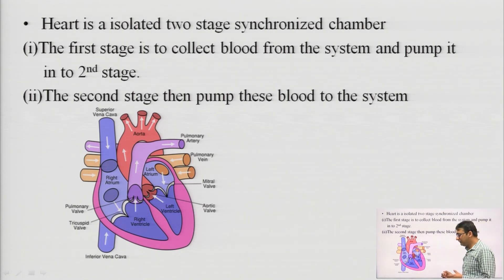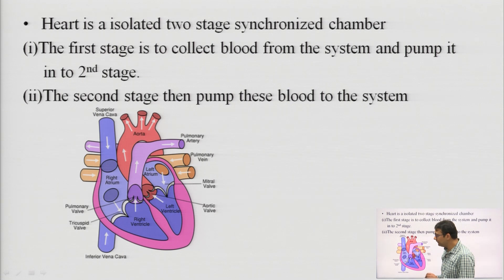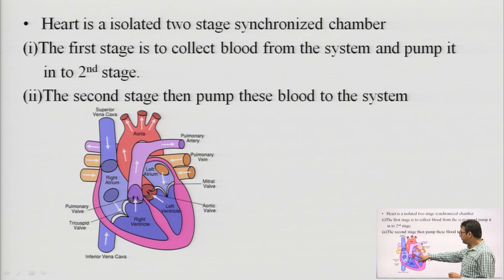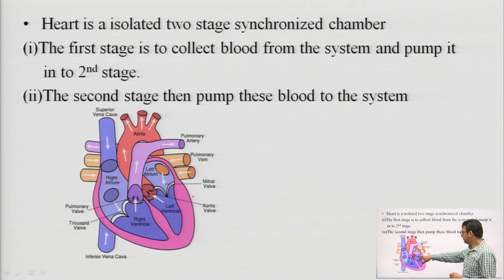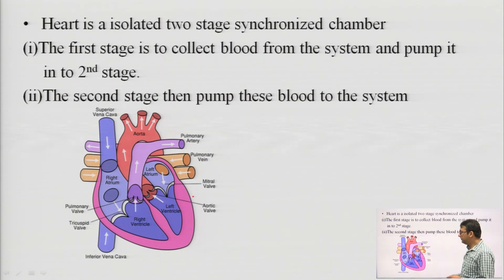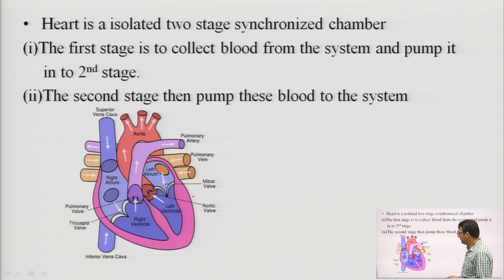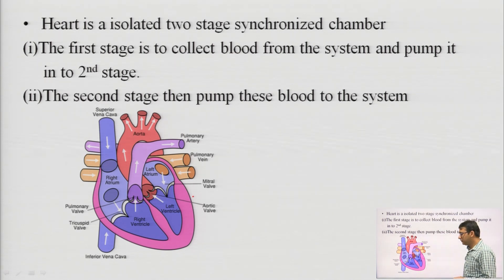This is an engineering or mechanical diagram of the human heart. Here we can see there are four chambers: right atrium, right ventricle, left atrium, and left ventricle. This heart is a two-stage pump. The right side collects blood from different body organs from the system and pumps the oxygenated blood to the lungs. The left side receives oxygenated blood from the lungs and pumps it to the main hydraulic system — that is, to the different body parts.